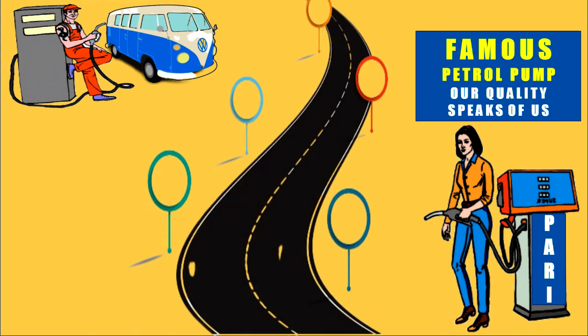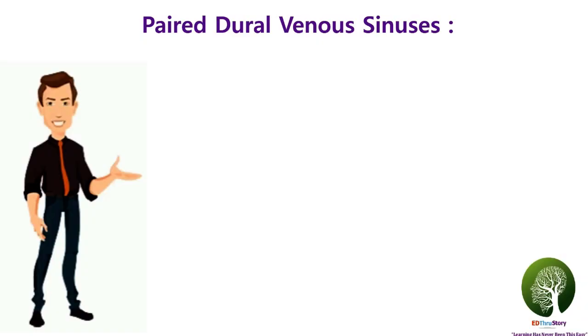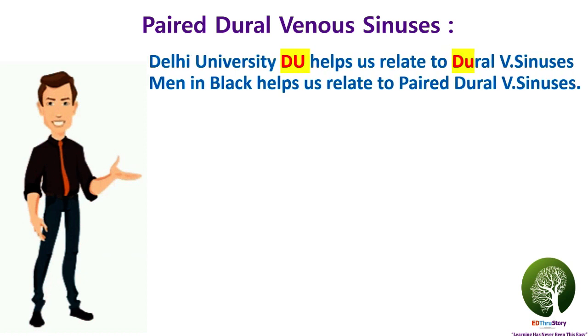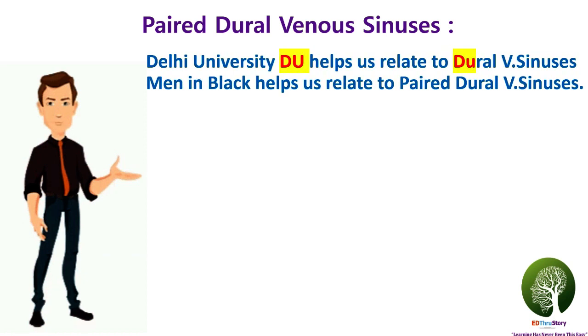They decided to fill the other half with superior quality petrol at the famous petrol pump run by my spinster friend Pari. The rope connecting the petrol stations was sigma shape. Pari and I studied together in Delhi University. Now let's see the connection of this story with the paired dural venous sinuses.